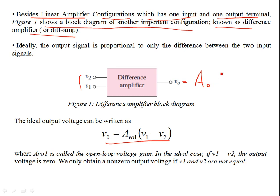Let's say A-naught is the open loop gain of the difference amplifier, and the difference signal is V2 minus V1. For example, if you have noise that is coupled at both terminals V2 and V1, the noise gets suppressed. For low noise switching applications, difference amplifiers are commonly used in analog electronics.